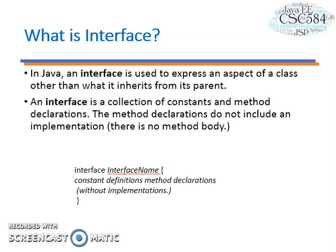Next, let's look at interfaces. Java has only single inheritance, meaning a child class inherits from only one parent class. While this is mostly sufficient in OOP, sometimes multiple inheritance would be convenient. Interface gives Java some of the advantages of multiple inheritance without the disadvantages. In Java, an interface is used to express an aspect of a class other than what it inherits from its parent. An interface is a collection of constants and method declarations — the method declarations do not include any implementation.